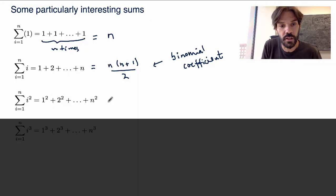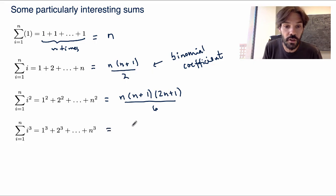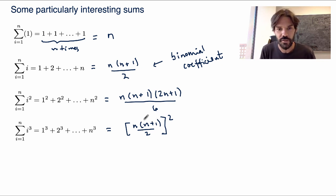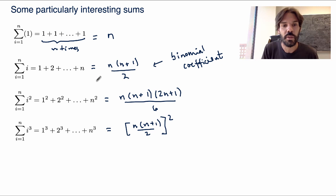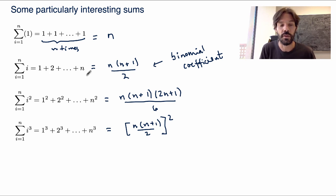The sum of the squares of the integers also has an expression, though slightly more complicated: n(n+1)(2n+1)/6. And the sum of the cubes of the integers gives n(n+1)/2, all squared. Notice that this is just the square of the sum-of-integers formula, so the sum of the cubes of the first n integers equals the square of the sum of the first n integers — which is actually not obvious at all, and a very good exercise to try to prove.